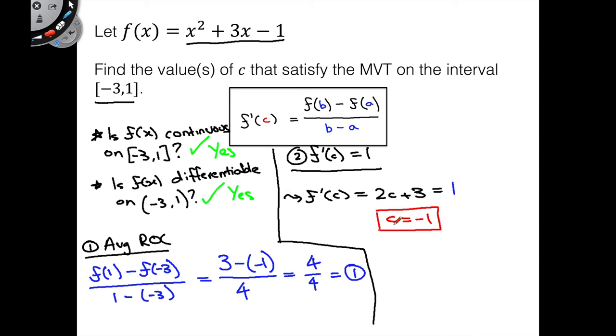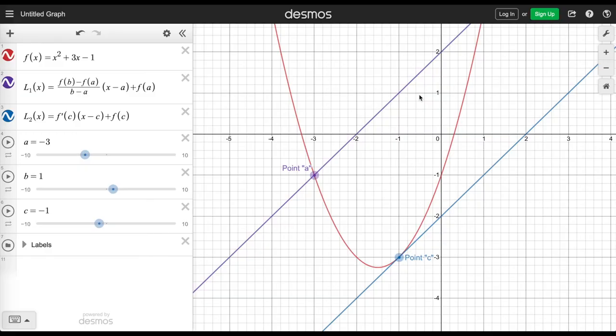Great, so we've basically walked through all the steps of the mean value theorem, right? We've checked that it's continuous and differentiable, found our average rate of change between a and b, and now we've found this value of c. Now let's look at a visualization, just to really tie this all together and really make sense of what this theorem is really telling us.